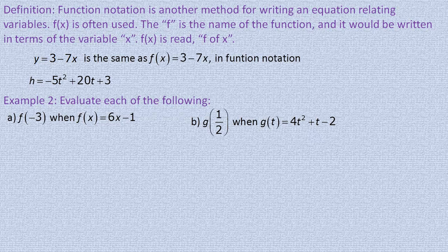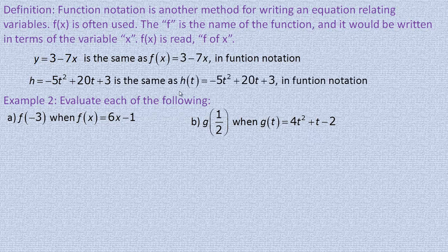If we have the function h equals negative 5t squared plus 20t plus 3 — this is like a physics example, the motion of a projectile. These values have physical meanings; the coefficient is actually negative 4.98 on Earth, but we'll round to the nearest whole number. Written as a function, we call h of t the height at a particular time: h of t equals negative 5t squared plus 20t plus 3.